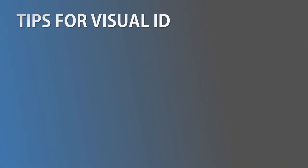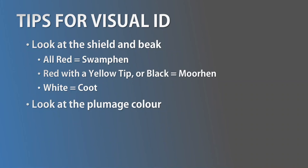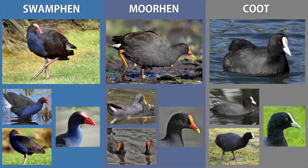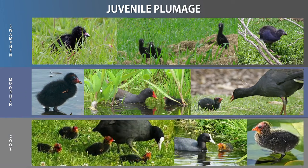Here are two rules for visual ID. One: look at the shield — if it's red, it's either a Swamp Hen or a Moorhen; if it's white, it's as bald as a Coot. Two: plumage is usually the giveaway — dark blue means Swamp Hen, dusky means Moorhen, black means Coot. To help associate appearance with name, use: 'sapphire Swamp Hen,' 'muddy Moorhen,' and 'charcoal Coot.' In low light, refer back to overall shape and build. Note that the Moorhen does have a tinge of blue, but not the rich sapphire blue of the Swamp Hen. Juveniles mostly look like black balls of fluff — differentiate them by their nearby parents.